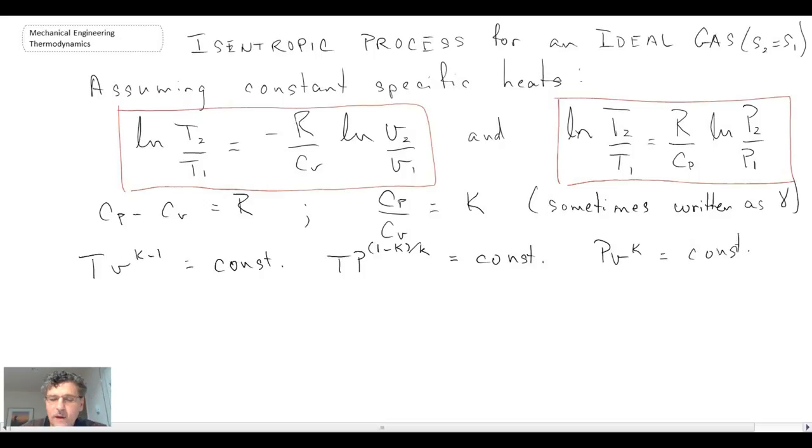So those are relationships that we sometimes use for isentropic processes. We also use the ratio of ideal gases. And they're quite convenient at times to do calculations. However, we should add the caution that they were under the assumption of constant specific heat. So your temperature difference cannot be that high.